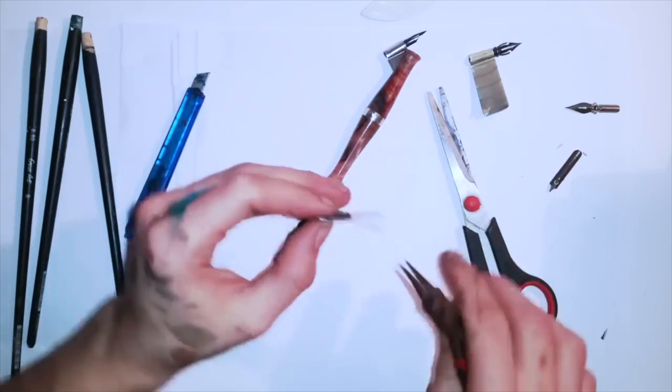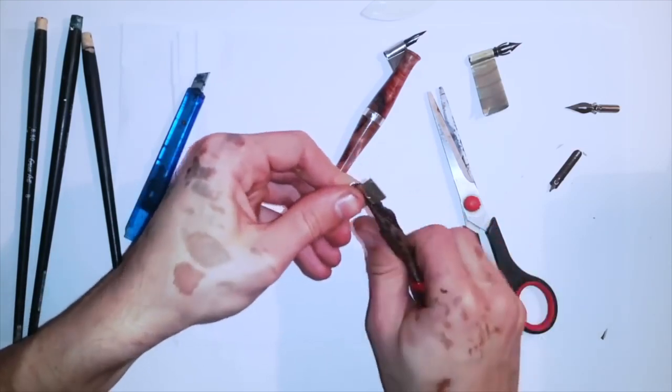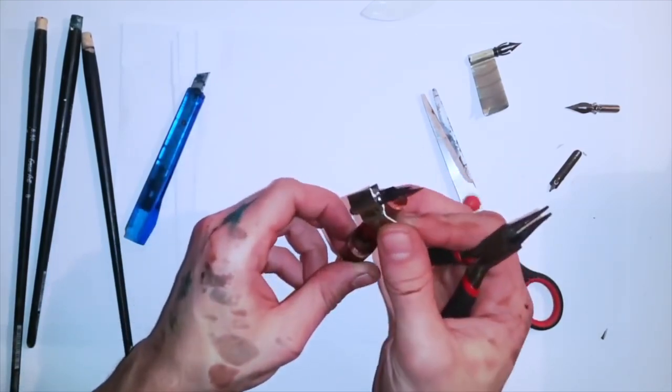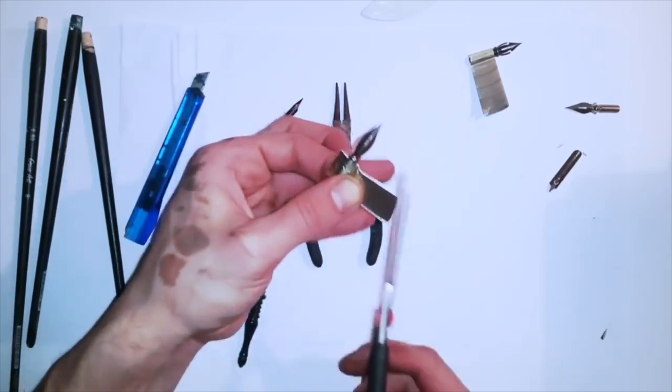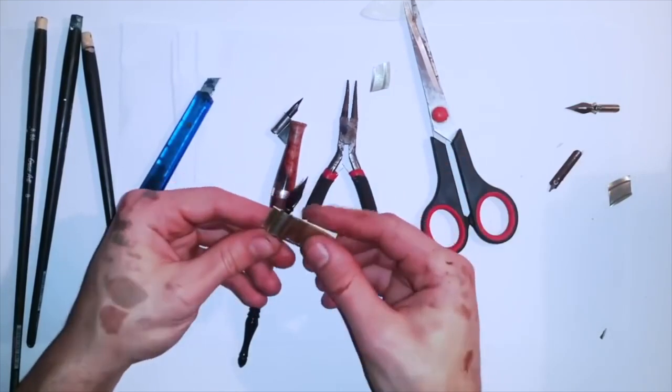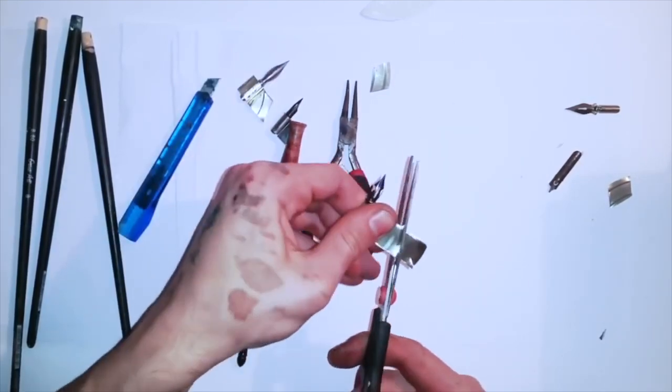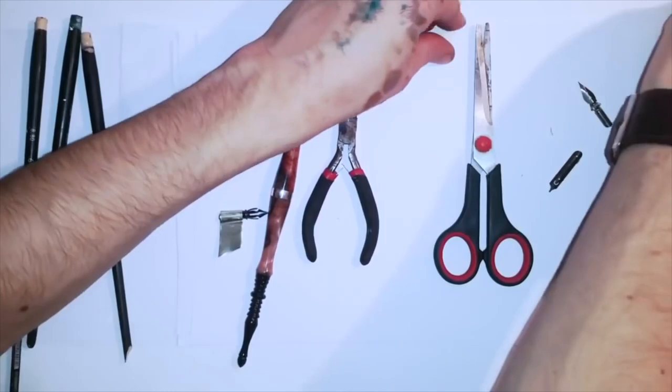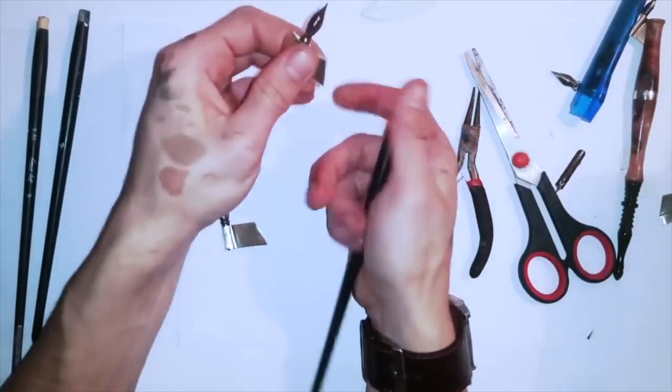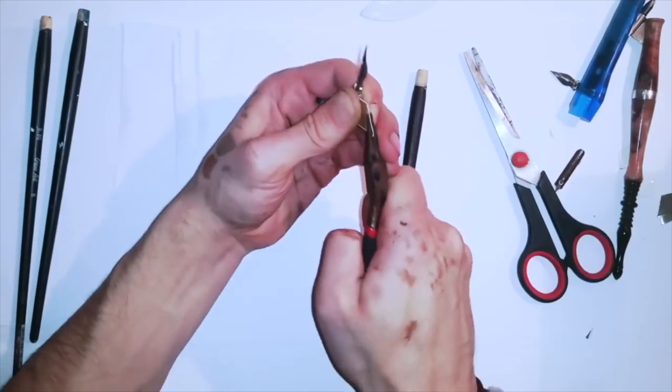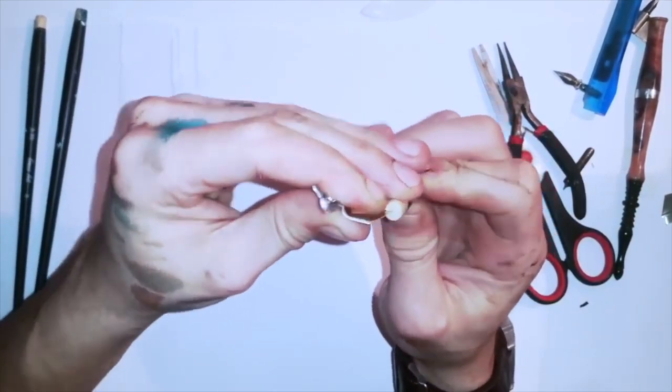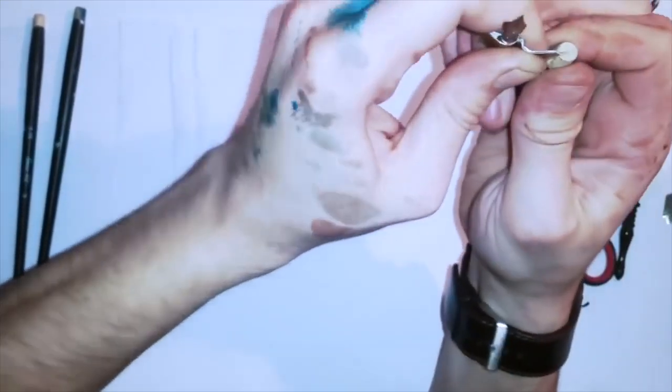The first one, I place the nib in the end exactly where the metal is folding. And then I saw my oblique pen holder that the nib is not exactly in the end where it folds. So I decided the second one to make it more like Kalem Cass oblique pen holder.